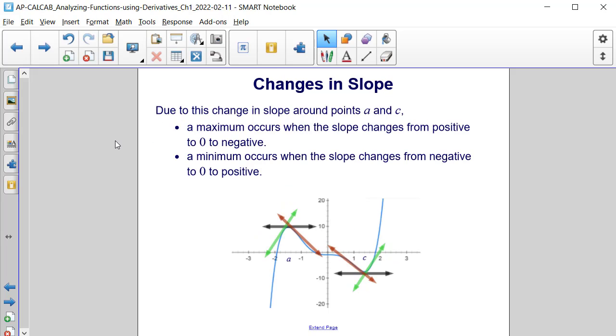Due to this change in slope around points A and C, we can observe that a maximum occurs when the slope changes from positive to negative. And a minimum occurs when the slope changes from negative to positive.